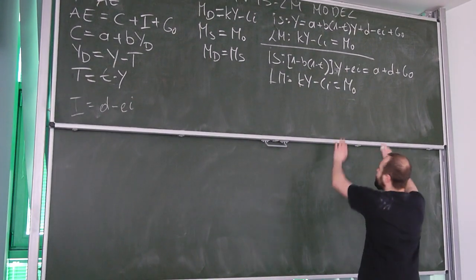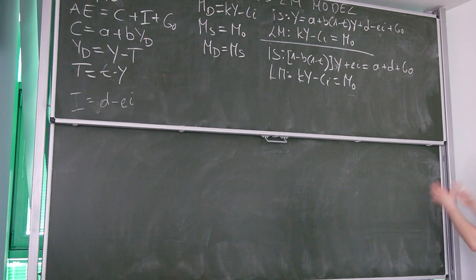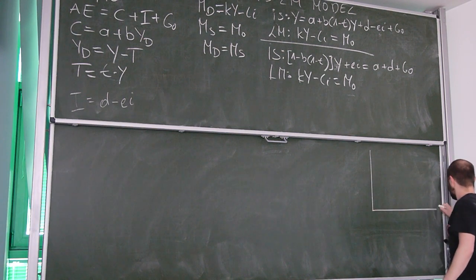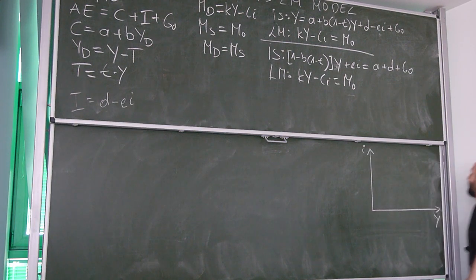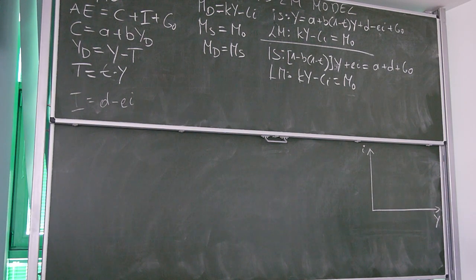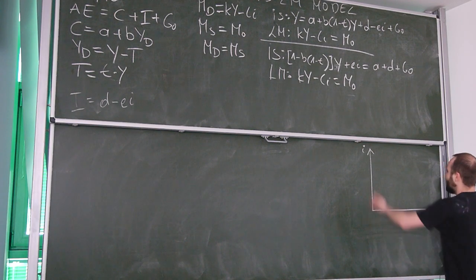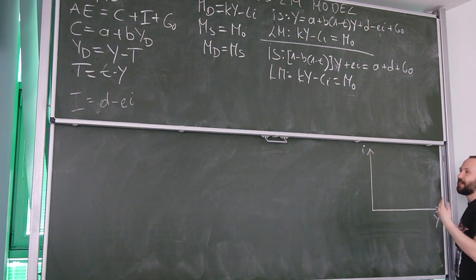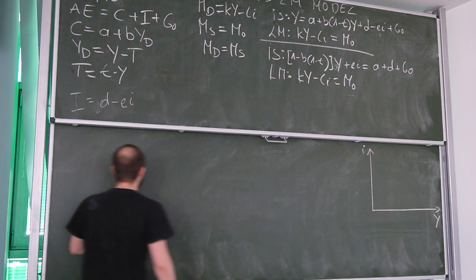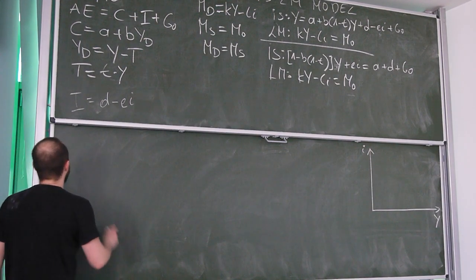Now let's make a graphical representation. We draw the model in income-interest rate space. To find the slope of IS, we need to calculate the appropriate derivative. Since i is on the vertical axis, we need to calculate di/dy. To obtain it, we use differentials.